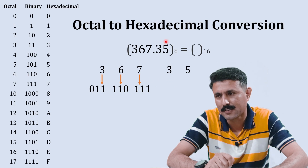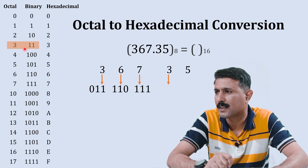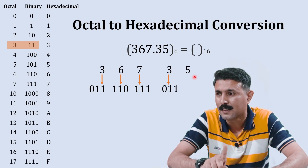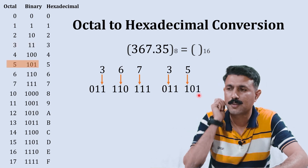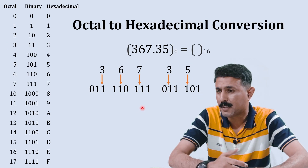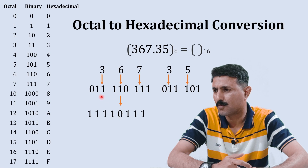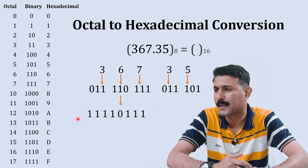Now we'll go for the fractional number. We'll start with three — binary equivalent to three is zero one one. The next number is five, and binary equivalent to five is one zero one. Now we combine all these binary numbers to form the complete number: one one one one one zero one one one. This is our complete binary number.